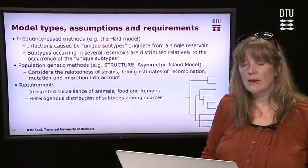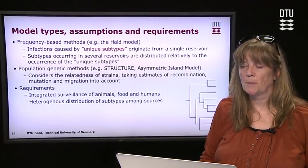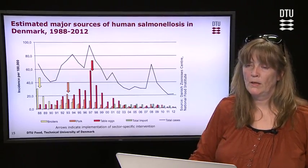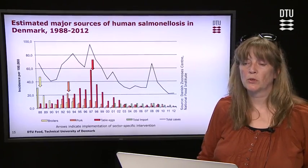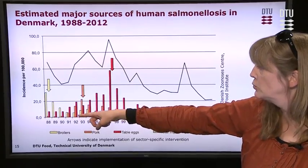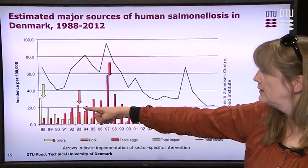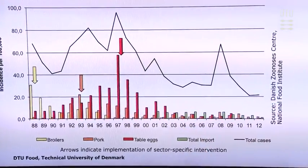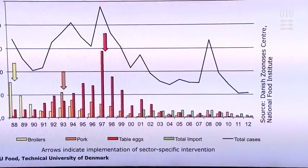For both methods, it is a requirement to have integrated surveillance of animals, food, and humans, and a heterogeneous distribution of subtypes among sources. This method has been used for many years in Denmark to estimate the major sources of human salmonellosis and to assess whether interventions have had impact. In the late 1980s there were quite many human cases related to broilers; after a control program was introduced, broiler-related cases declined. The same was seen for pigs and most significantly for eggs. Currently, attribution to domestic sources in Denmark is low, while imported food is somewhat more important.